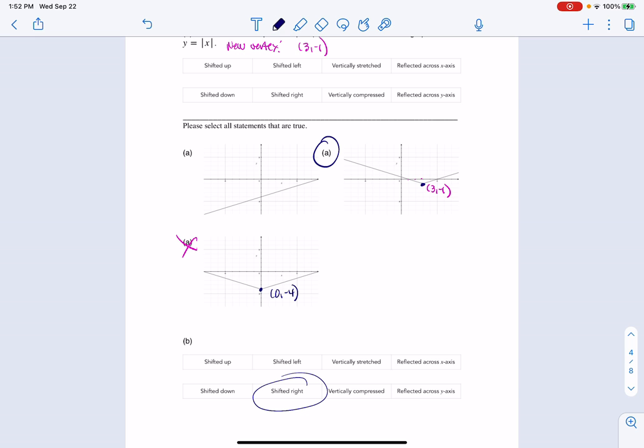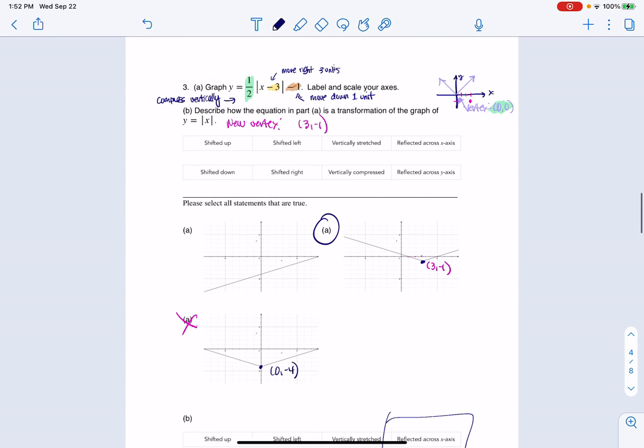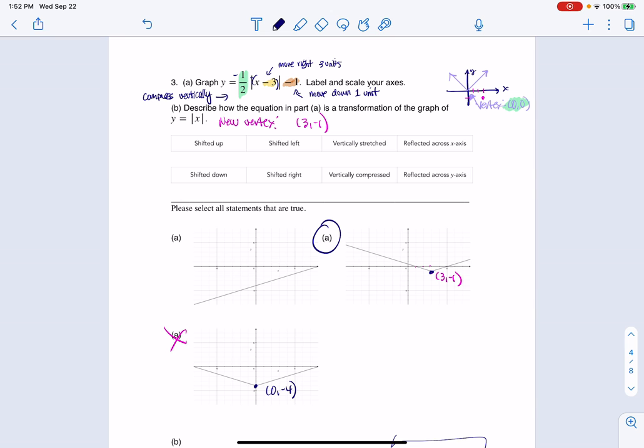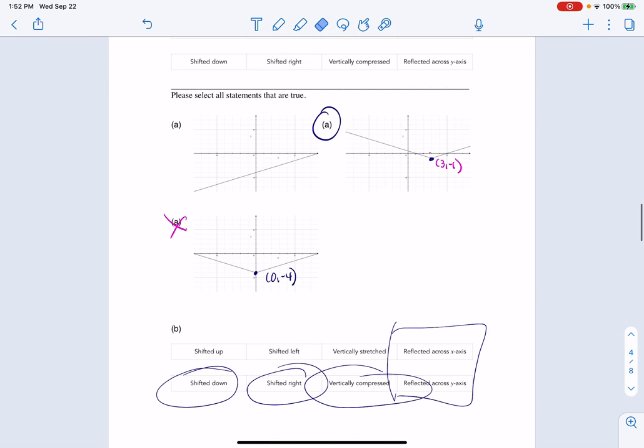I shifted right, 3 units right, I went 1 unit down, and then I was vertically compressed. I didn't reflect across either axis. When you reflect, you might have a negative out here if you're reflecting across the x-axis. And if you had a negative inside the grouping symbols, you would be reflecting over the y-axis. But we don't have that in this particular problem, so I'm going to leave those uncircled.